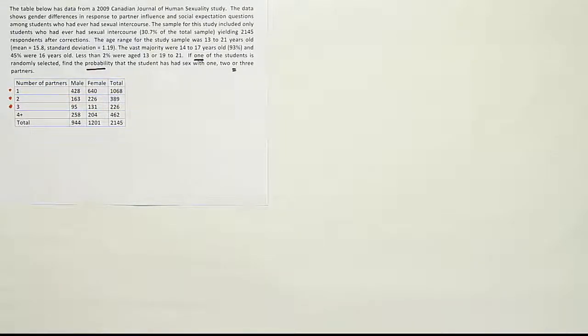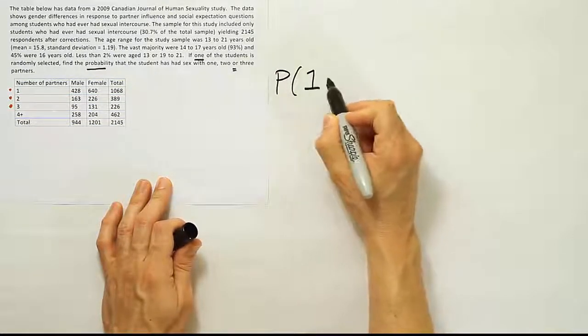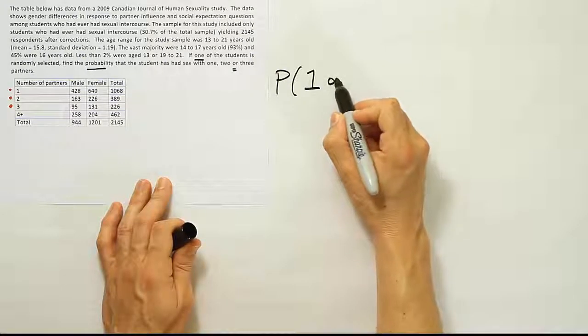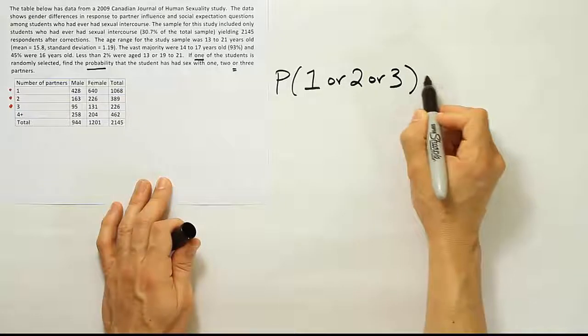Let's talk about that simple form then. If we're doing the probability that a person has one partner or two partners or three partners, and they're mutually exclusive,